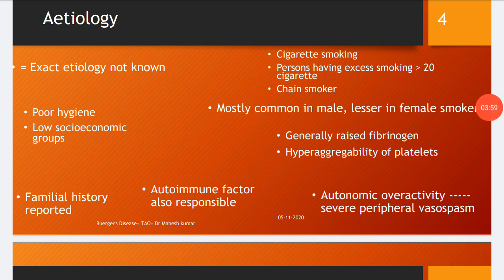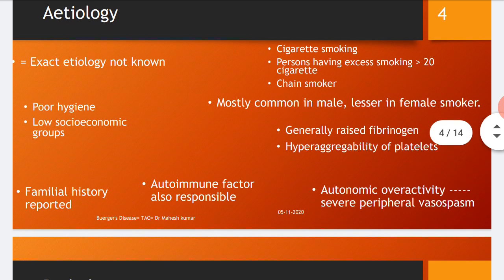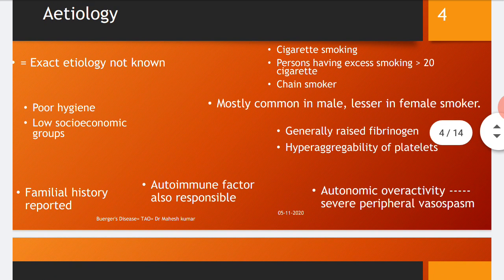The smoking index (SI) is calculated based on the number of cigarettes smoked per day and the number of night smoking sessions. A smoking index greater than 300 is considered a risk factor for Buerger's disease.